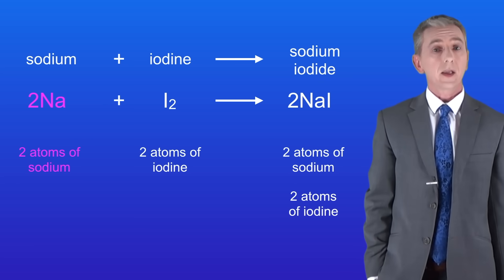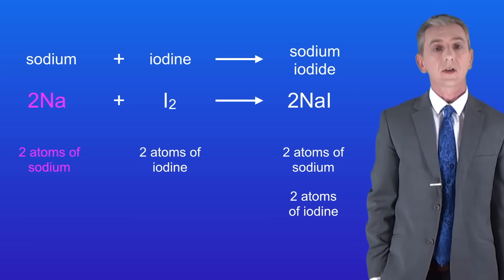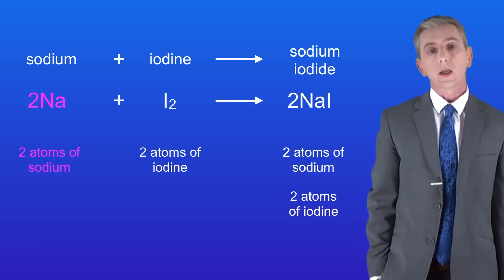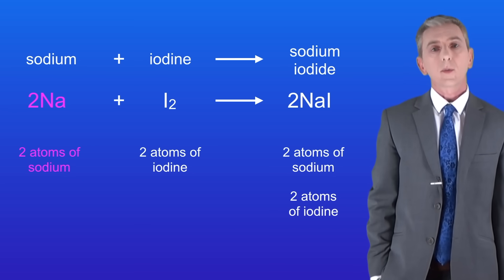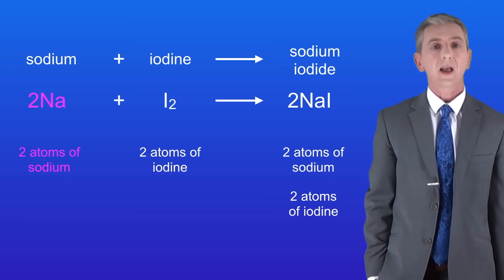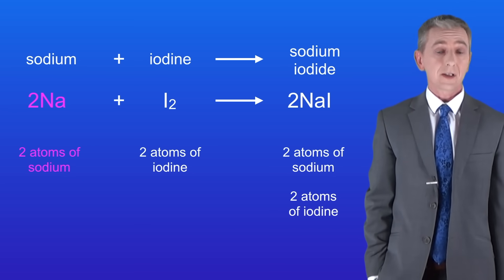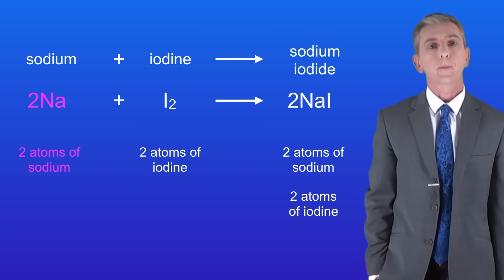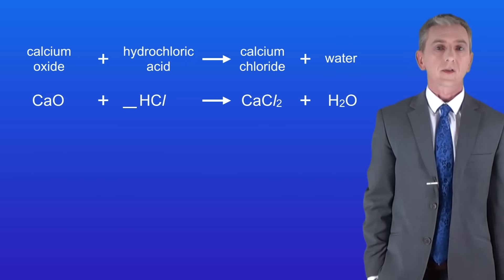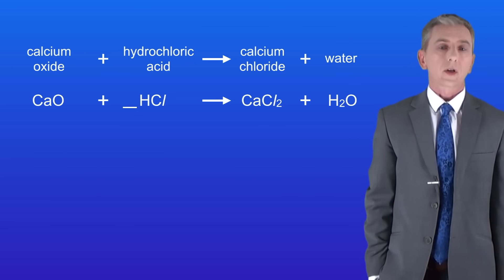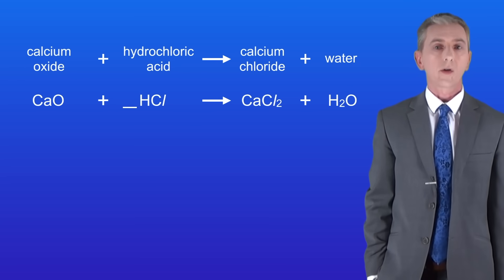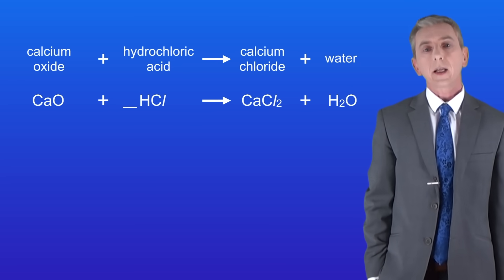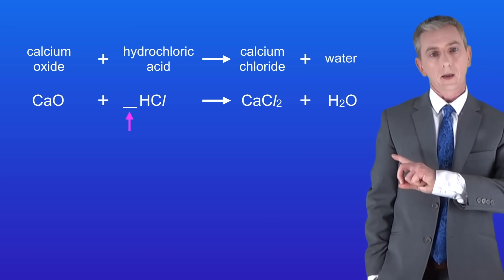In the exam you're not normally asked to balance an entire equation — usually you're only given one part to balance. Here are a couple of examples typical of what you could get in your exam. In this first example we've got calcium oxide plus hydrochloric acid producing calcium chloride plus water. Balance this equation by inserting a large number in the space provided.